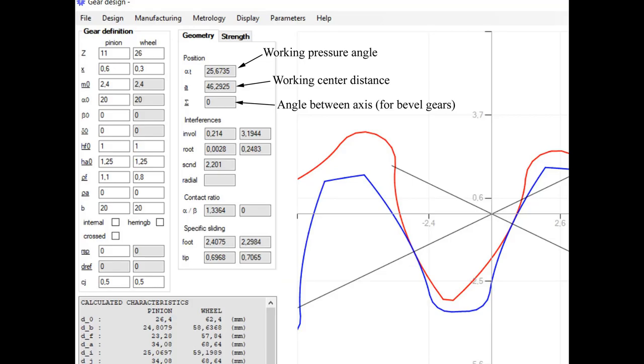Geometry and kinematics reasons: the working pressure angle, the working center distance or angle between axis for the bevel gears, the interferences, the contact ratio, the specific sliding, all the gears dimension and metrology dimension for control.